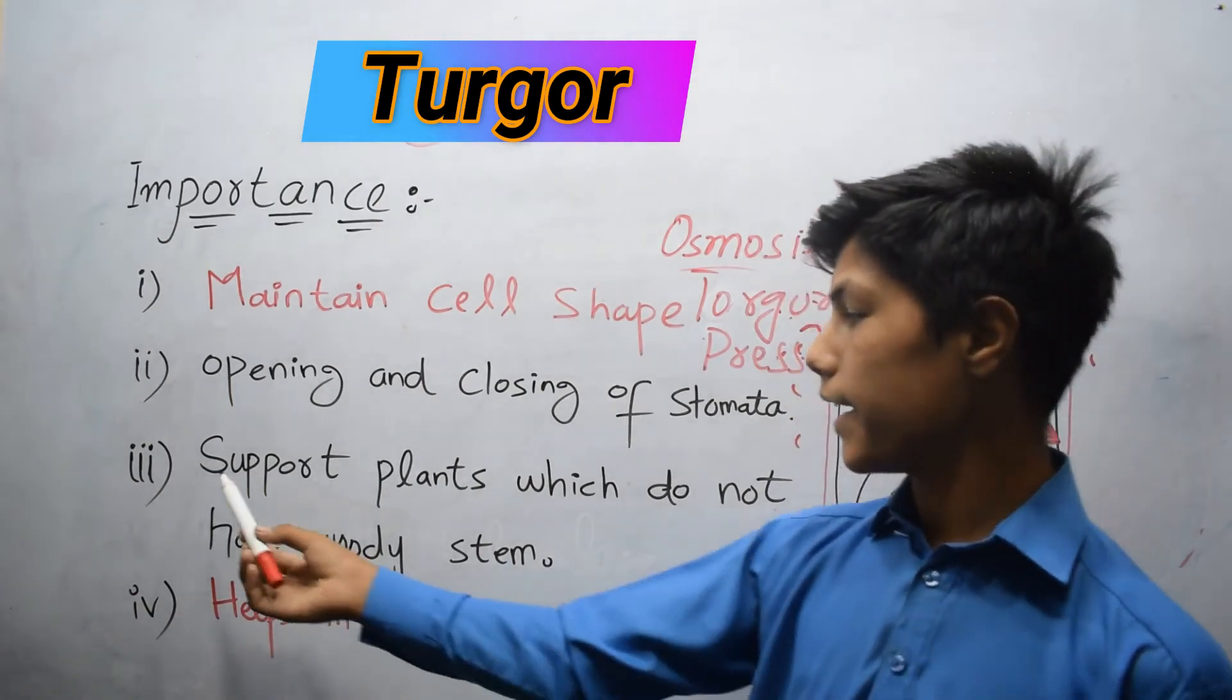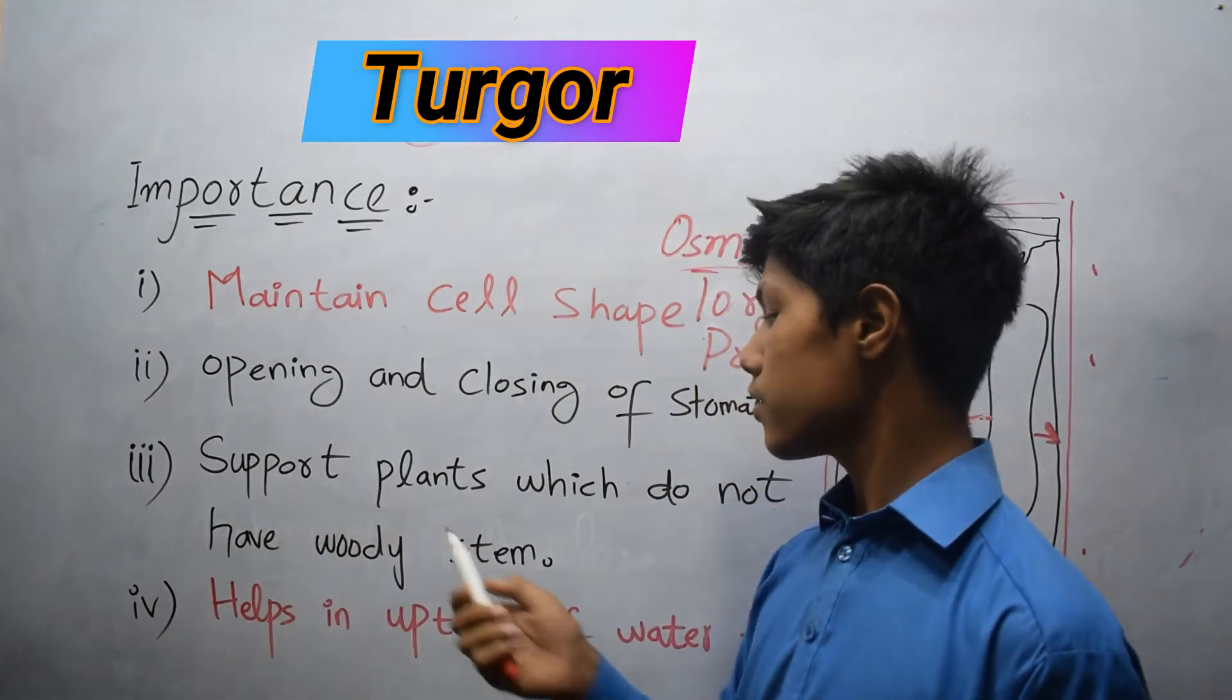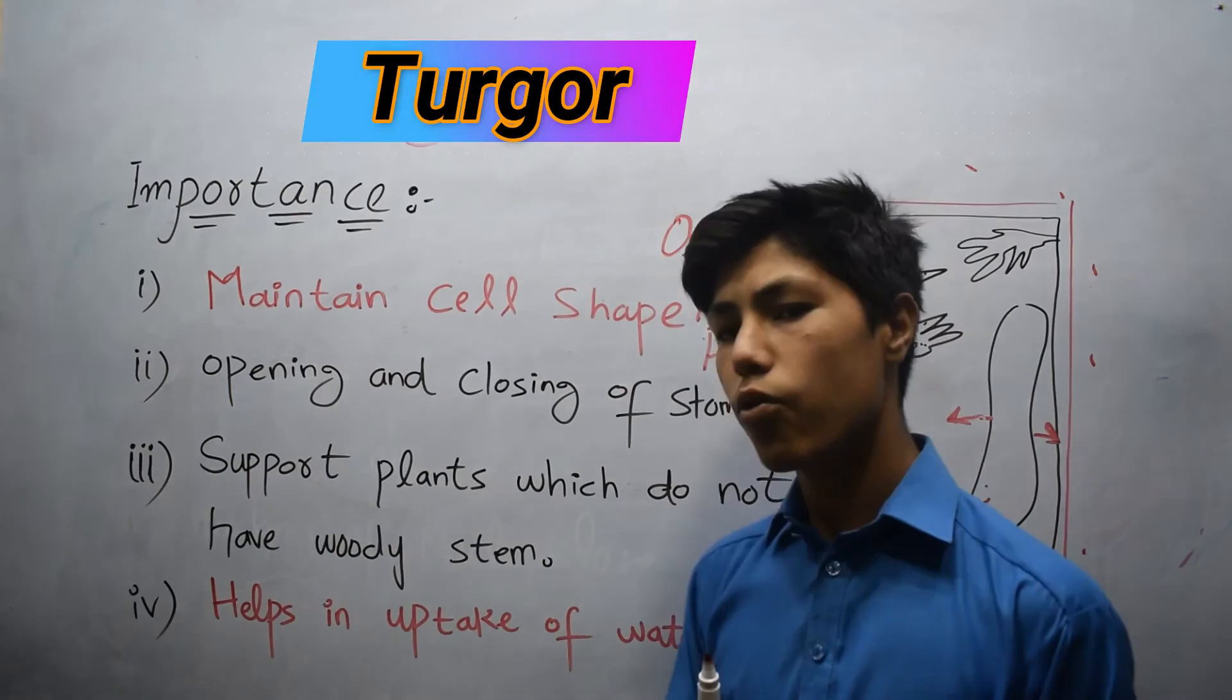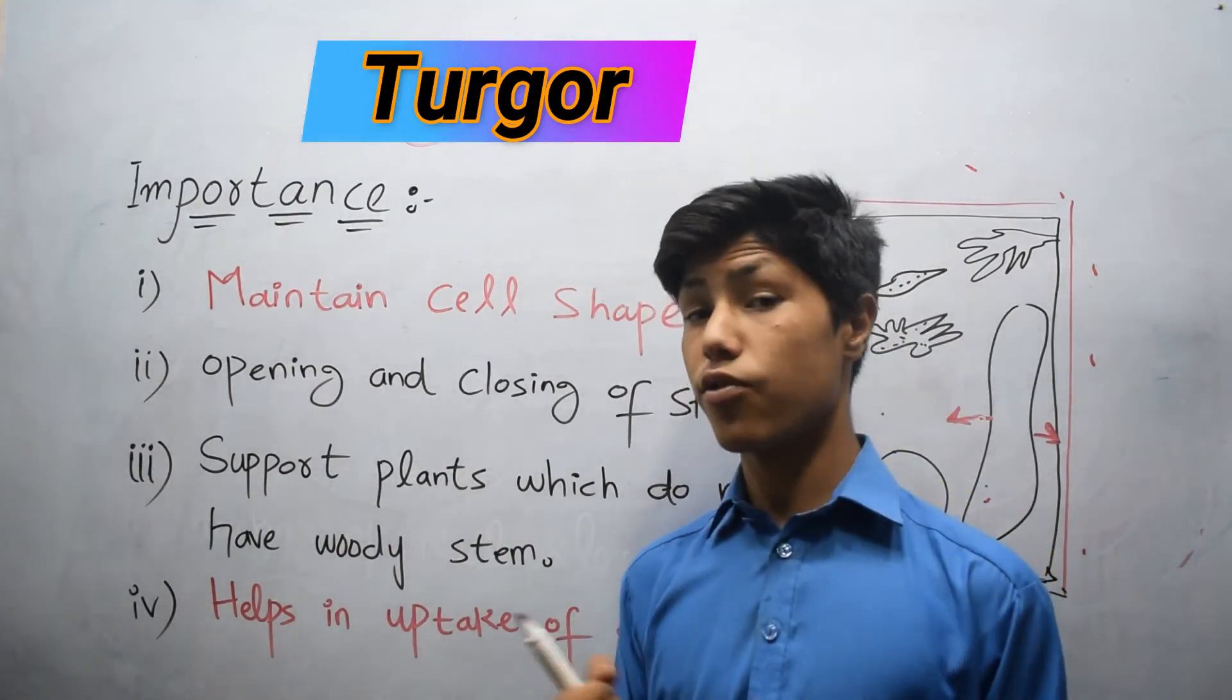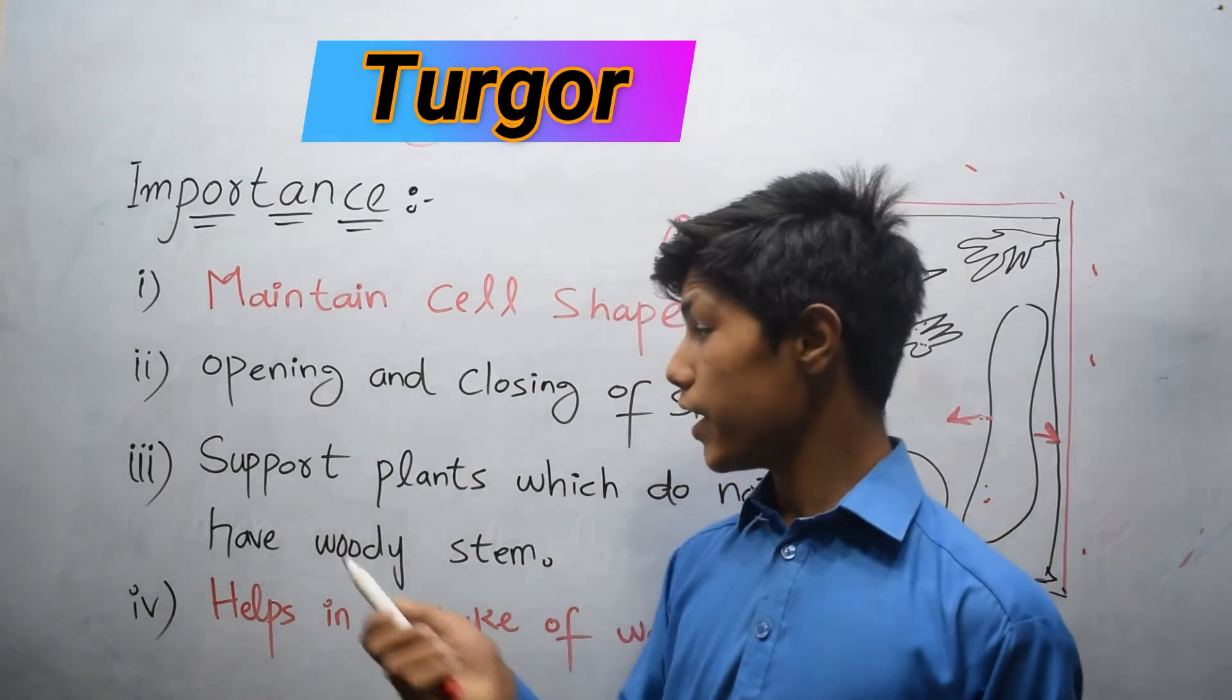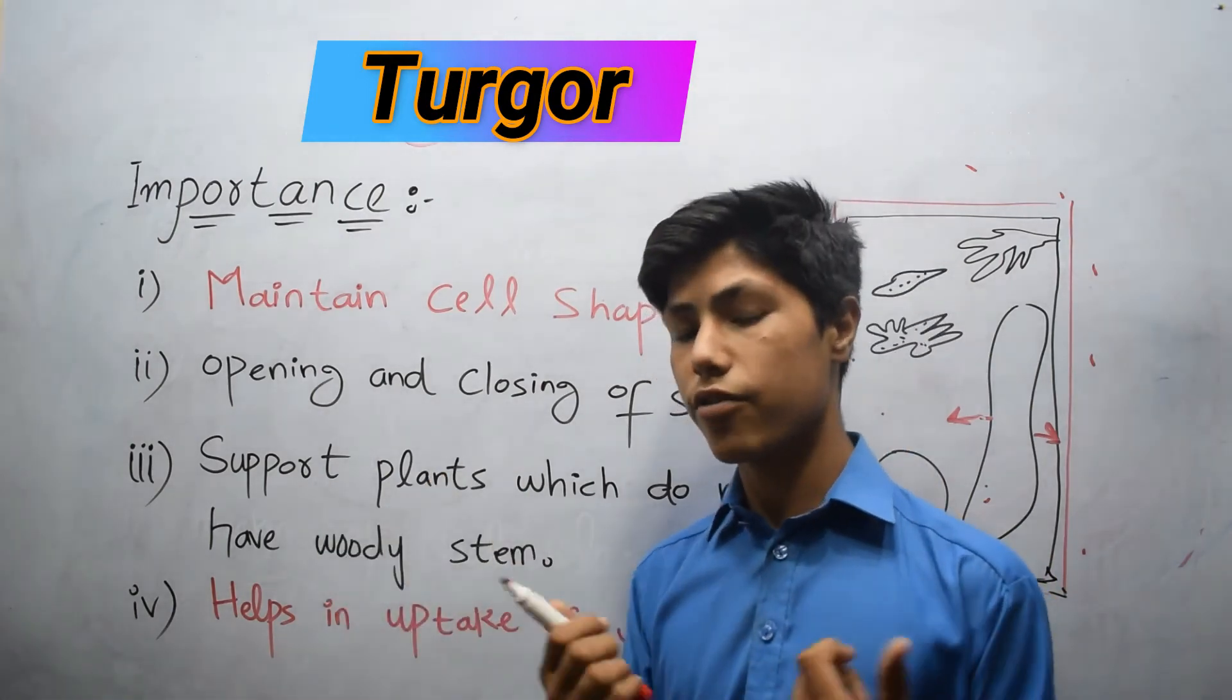The third one is it supports plants which do not have woody stem. For example grass. Grass have no woody stem, so it supports plants which have no woody stem.